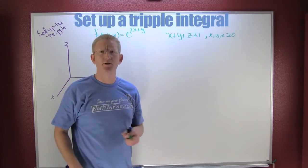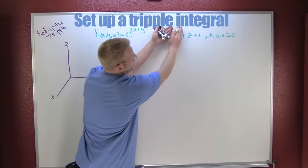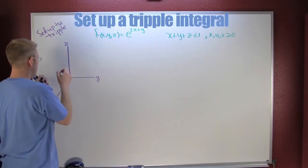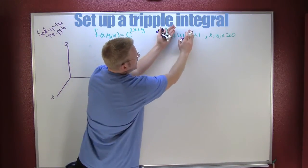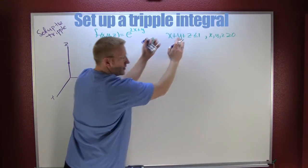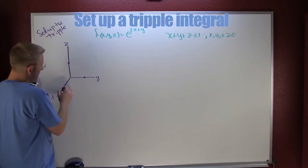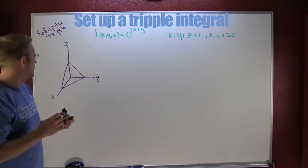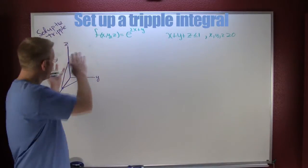So if I was going to graph this guy, if I let X and Y be 0, looks like Z is 1. If I let X and Z be 0, looks like Y is 1. And similarly, when Z and Y are 0, X is 1.